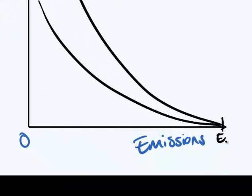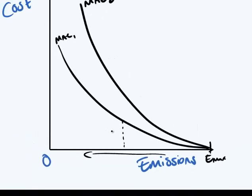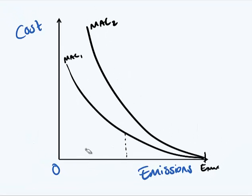So what we can see here is for company one to reduce from the maximum amount to, let's say, an amount called e1, has a cost of c1. For the other company to reduce the same amount has a much higher cost of c2.